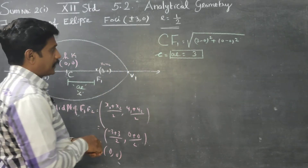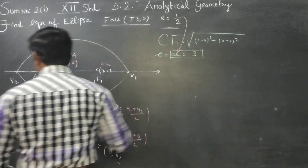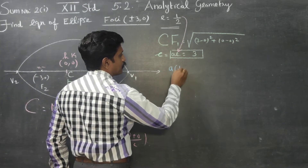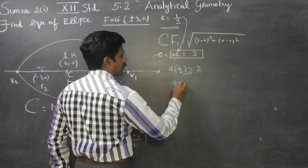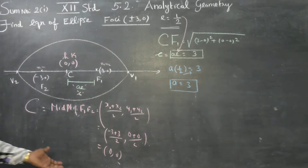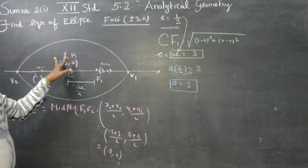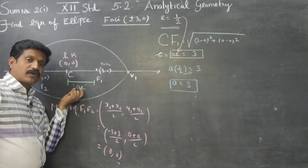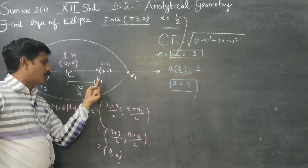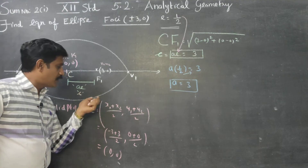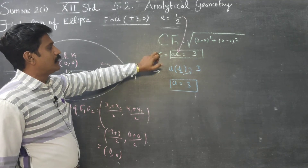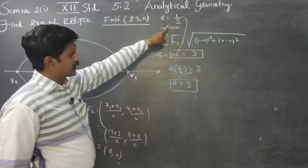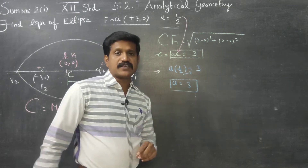After finding CF1, what is e? E is equal to 1 by 2. AE is equal to 3, so A into 1 by 2 is equal to 3. Cross multiplying, A is equal to 6. The distance between the center and the focus is always called AE or small c. C is equal to AE, that is 3. CF1 is called AE. E is 1 by 2, so cross multiply: A is equal to 6.